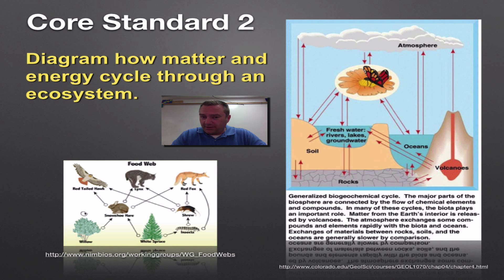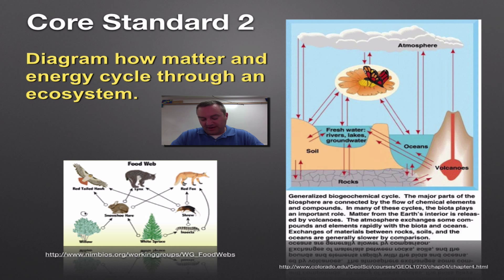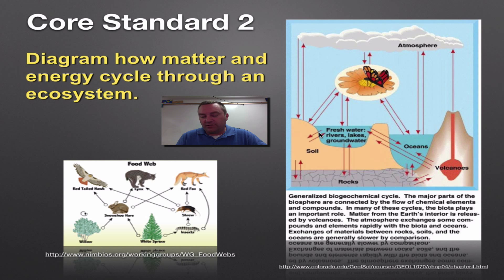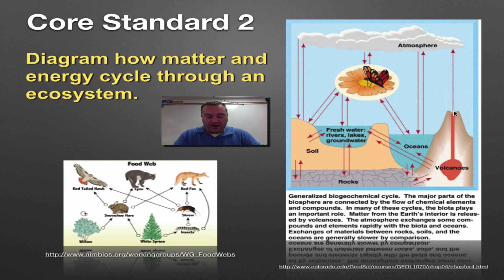Core standard number two talks about how matter and energy — think food — move throughout an ecosystem. Chapter three covers food chains and food webs. The picture on screen shows the basic structure of a biogeochemical cycle, where materials move between water, land, and the atmosphere, involving living things and volcanoes. Think of the carbon cycle, water cycle, nitrogen cycle, and phosphorus cycle.